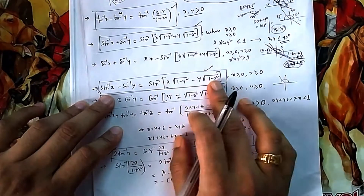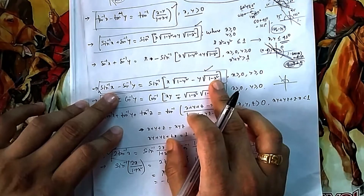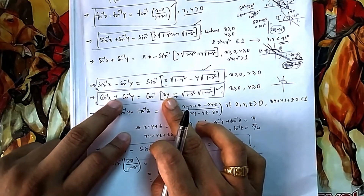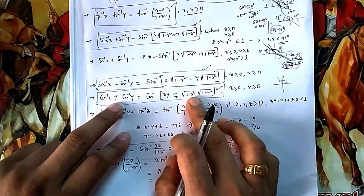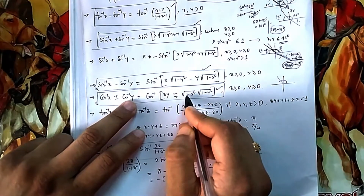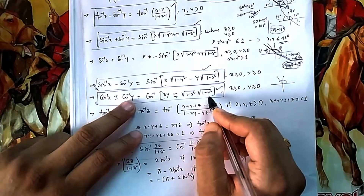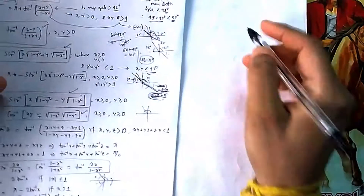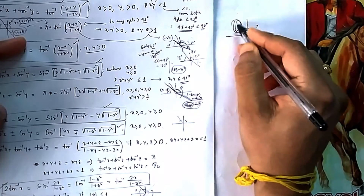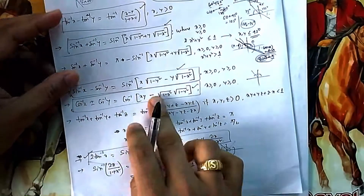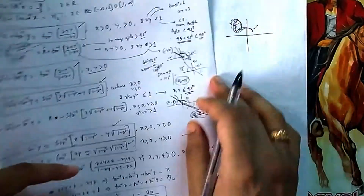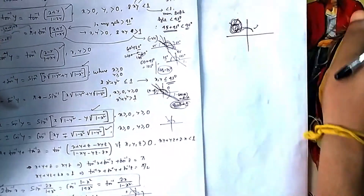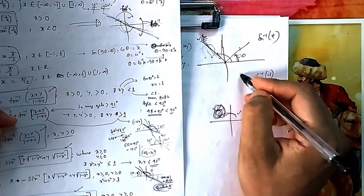For sin⁻¹x − sin⁻¹y, using sin(a−b) = sin a cos b − cos a sin b, there is no problem — the difference stays in range. For cos⁻¹, the formula involves cos a cos b − sin a sin b (for addition) or cos a cos b + sin a sin b (for subtraction). Cos⁻¹ outputs cover the first and second quadrants, so even if the sum lands in the second quadrant, cos⁻¹ can still give that answer directly.